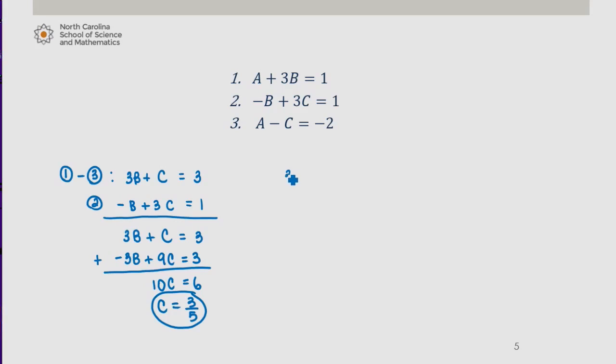Knowing this, using equation 3, A minus 3 fifths equals negative 2, which then gives me that A is negative 7 fifths.